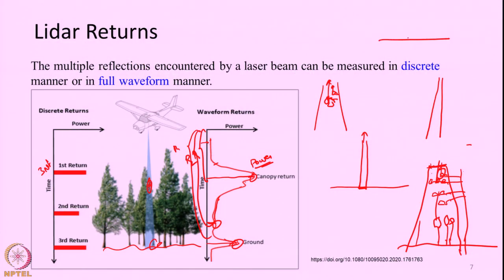For a single footprint x, y you have 3 different elevation measurements. Over a 2D area this produces what is known as a point cloud. This is the discrete way of measuring LiDAR signals, and it was among the earliest developments — most systems worked in this discrete mode. People realized that for some applications, especially vegetation monitoring, storing the full return is beneficial for modeling.